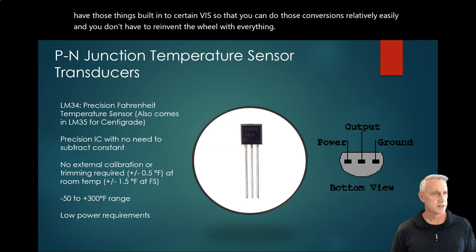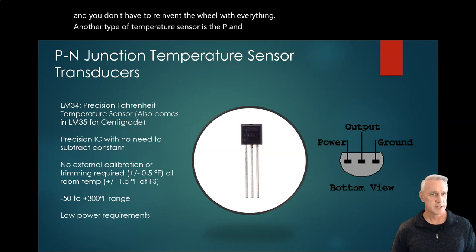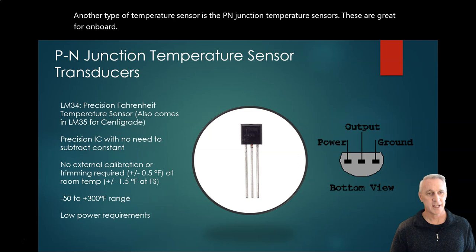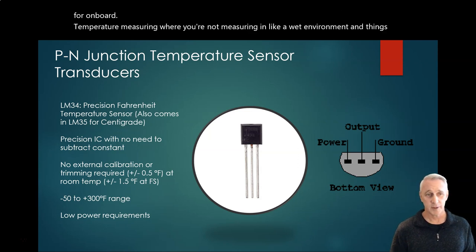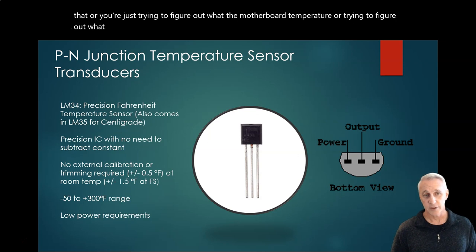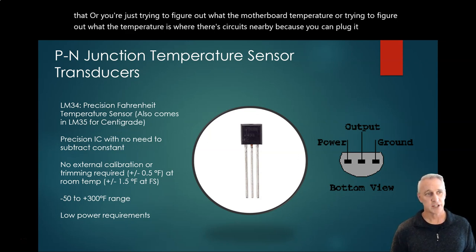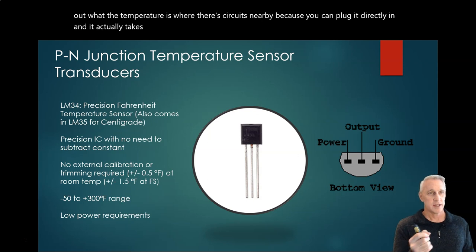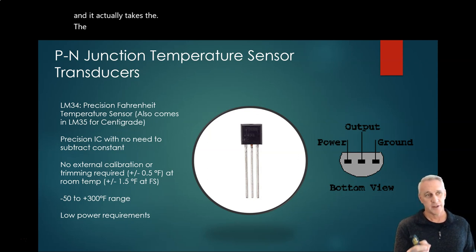Another type of temperature sensor is the PN junction temperature sensors. These are great for onboard temperature measuring where you're not measuring in like a wet environment and things like that, or you're just trying to figure out what the motherboard temperature is or trying to figure out what a temperature is where there's circuits nearby. Because you can plug it directly in and it actually takes the temperature of the chip itself.